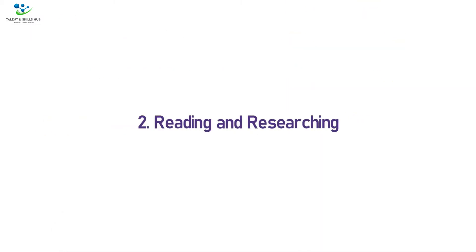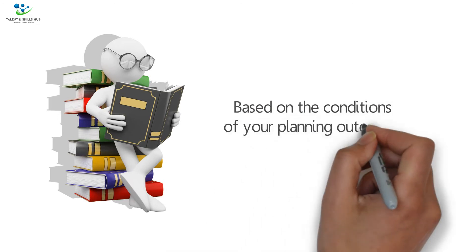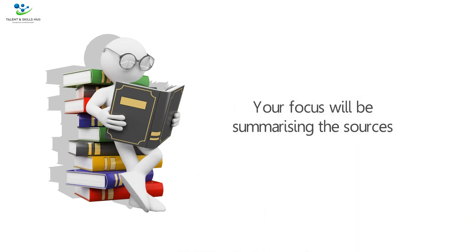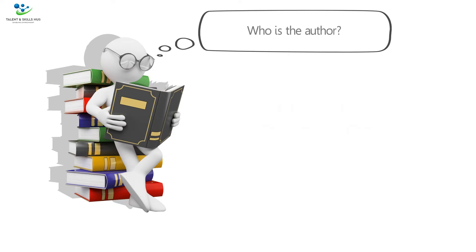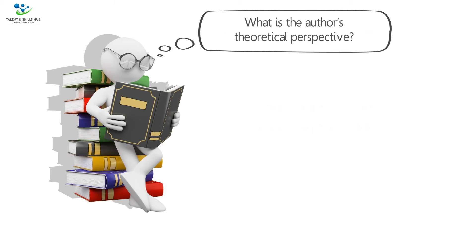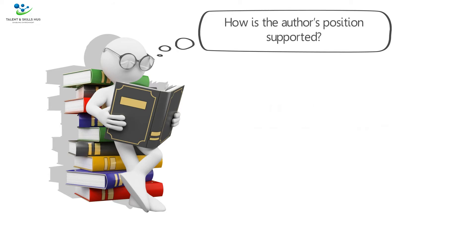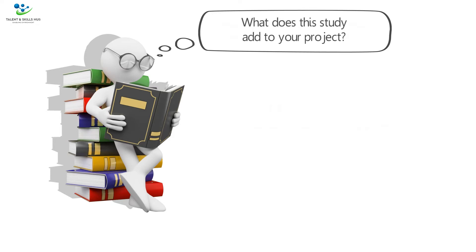Step two: reading and researching. After the planning stage, you will start to collect and read materials based on the conditions of your planning outcomes. While reading the materials, your focus will be on summarizing the sources by asking: who is the author? What is the author's main purpose? What is the author's theoretical perspective and research methodology? Who is the intended audience? What is the principal point, conclusion, thesis, contention, or question? How is the author's position supported? How does this study relate to other studies of the problem or topic? What does this study add to your project?